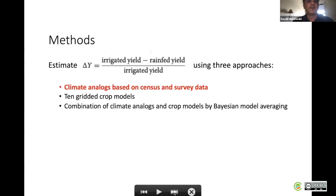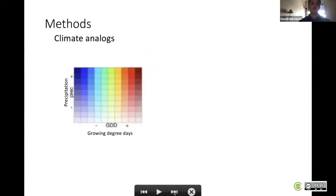First, some information concerning the first approach. In the first approach, climate analogues, the world is divided into climate bins. Each bin is characterized by a range of growing degree days and a range of precipitation.